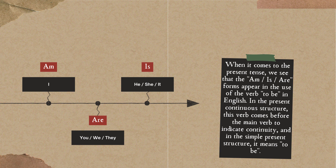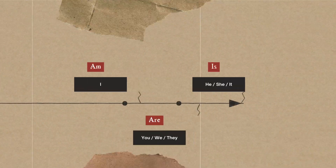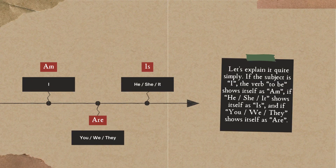In the present continuous structure, this verb comes before the main verb to indicate continuity, and in the simple present structure, it means to be. So, how does the English verb to be vary depending on the subject, and how does the use of am, is, are occur? Let's explain it quite simply.